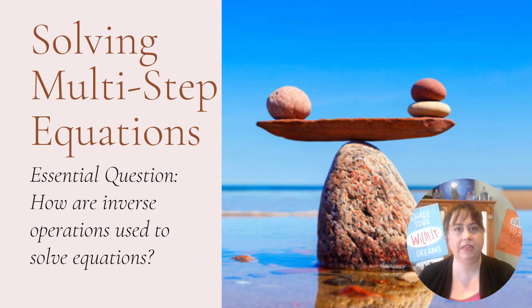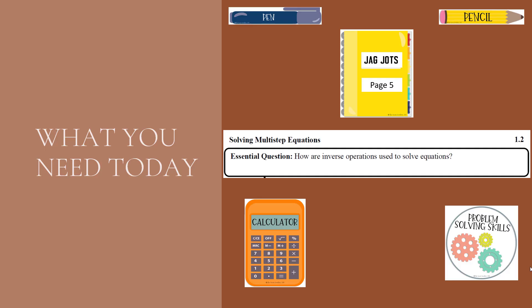So let's see what you need to get started today. You'll need something to write with, either a pen or pencil. Your Jaguar shots starting on page 5. It'll say 1.2 solving multi-step equations at the top. A calculator either on your computer, a phone, or standalone, and your problem-solving skills as always.